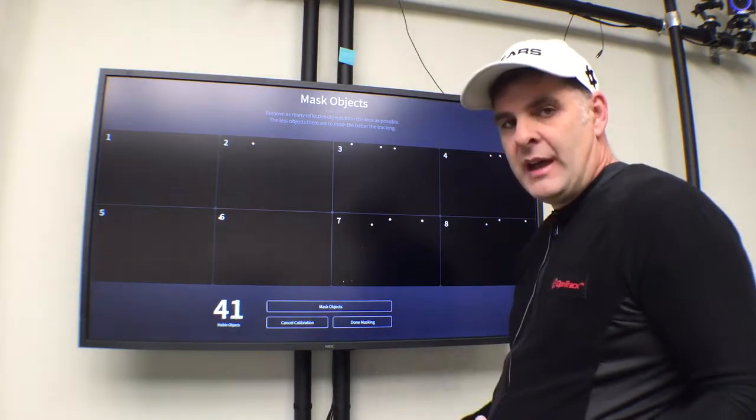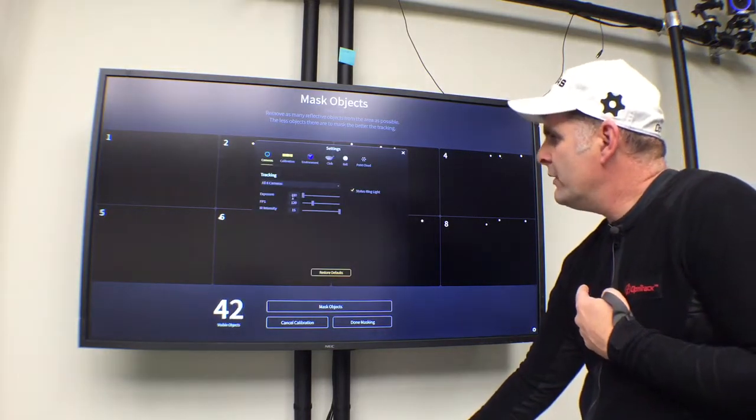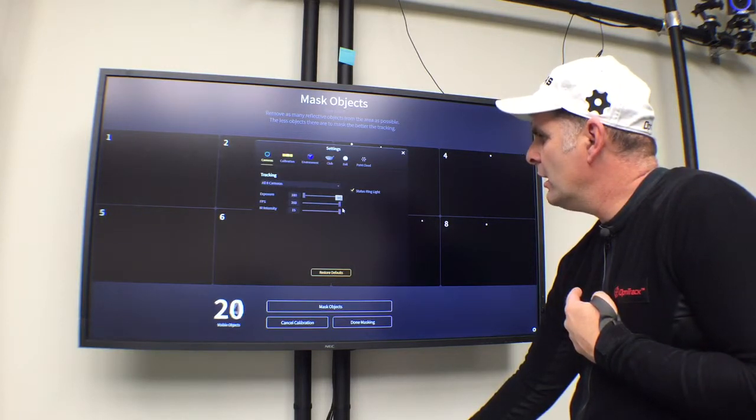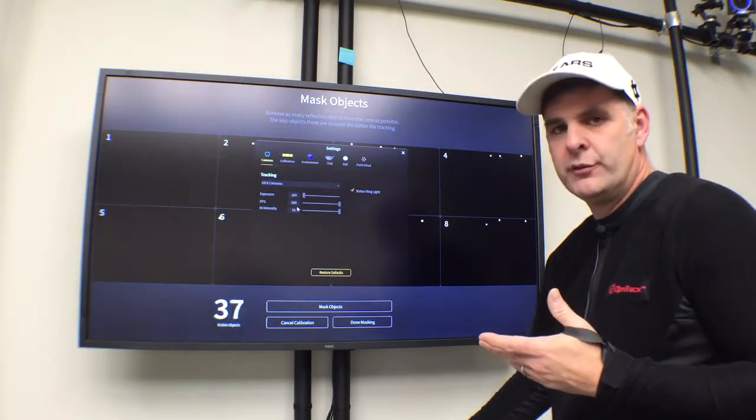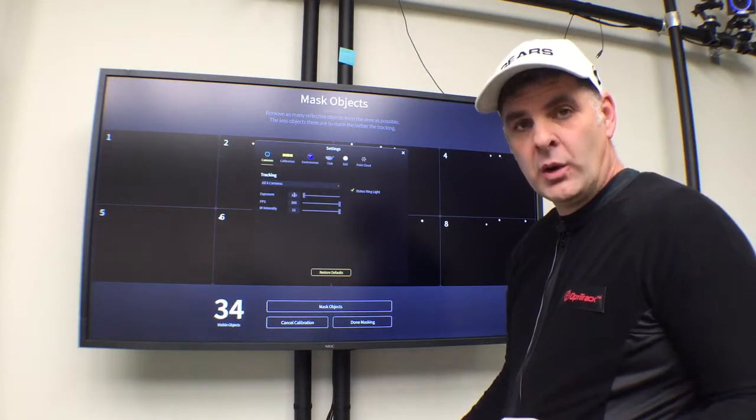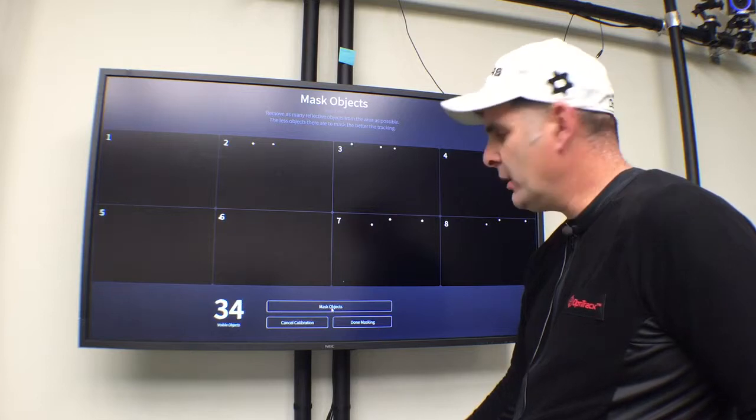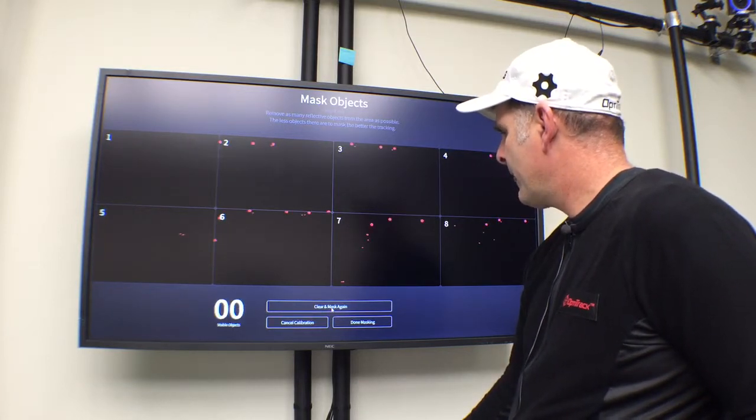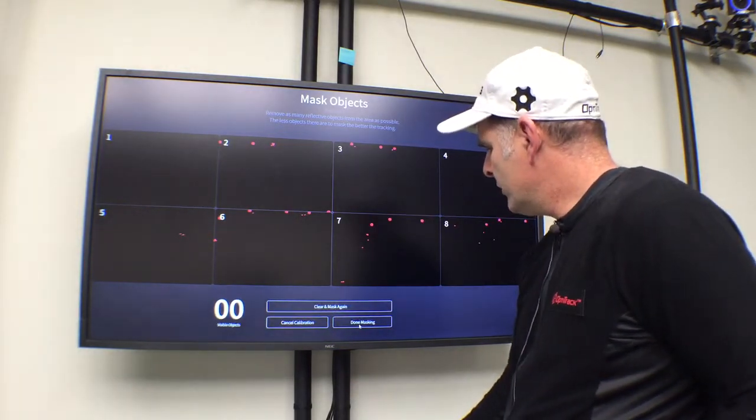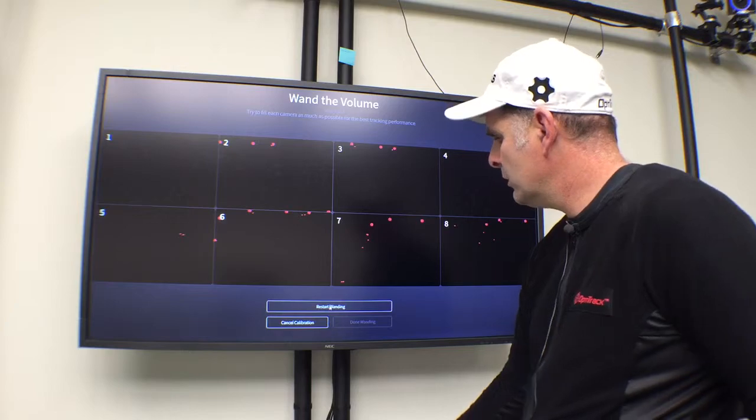You'll notice here under settings we have the exposure at 100 and the frame rate. This is a 360 system. If you have a 240 system, you want to make sure that's at 240. For indoor it's 100, and for outdoor it's 50. Basically what you'll do is press this button called Mask Objects. What that does is get the visible objects down to where you can't see any. Once you do that, you hit Done, and then you're going to press Start Wanding.